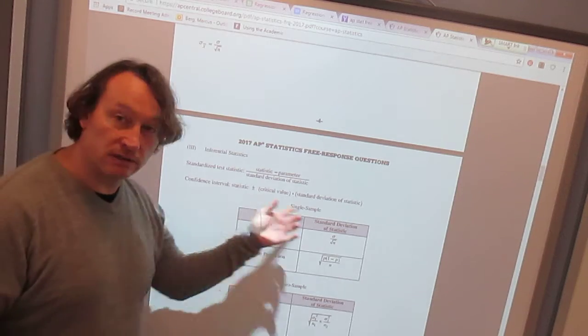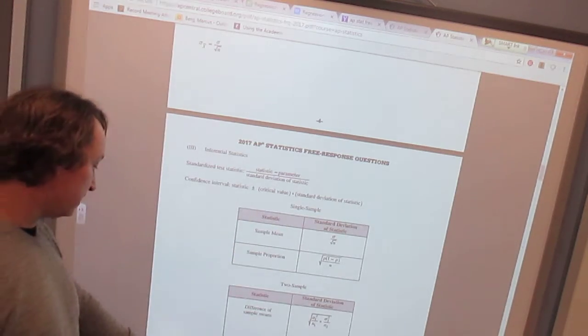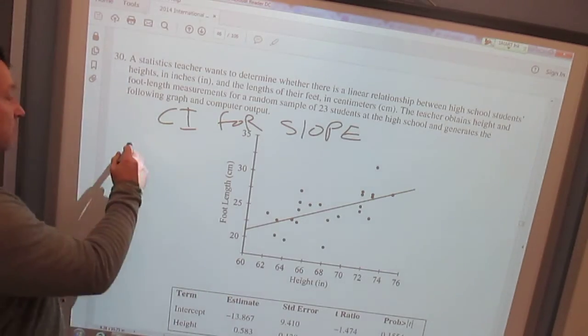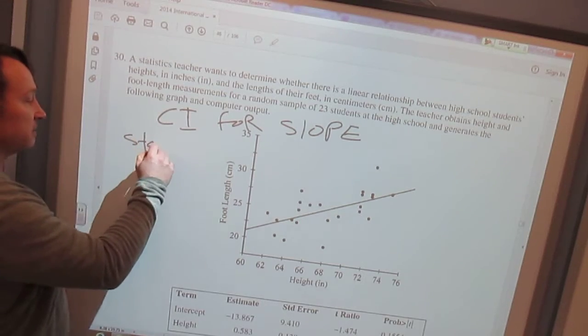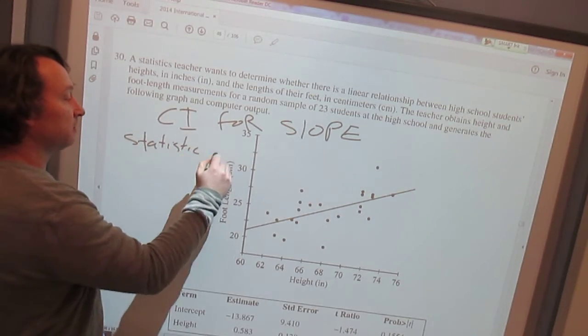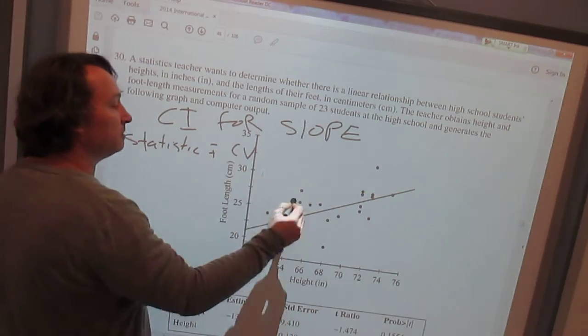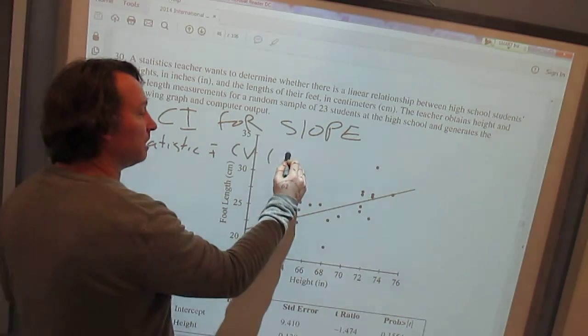Easy peasy, so we just got to know what these things are and where do we get them from the output. So it's going to be your statistic—watch out for that. Statistic plus or minus critical value times your error.